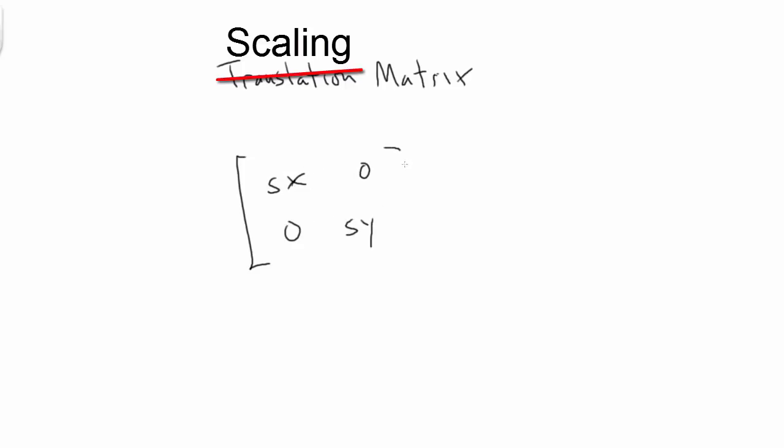In the example we did with a scalar value, we multiplied all the elements by a single scalar value. But what if we wanted to scale differently on the x and y axes? Well, we could set up a scaling matrix like this. Sx, 0, 0, Sy. Sx is the scale value on the x-axis. Sy, on the y-axis.